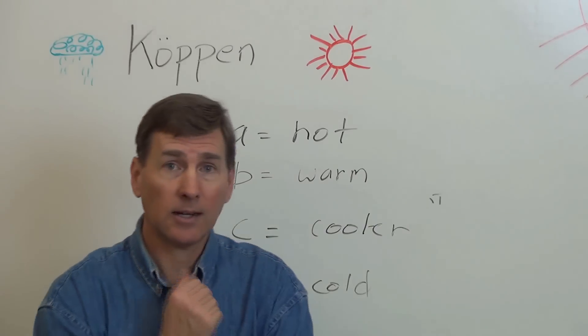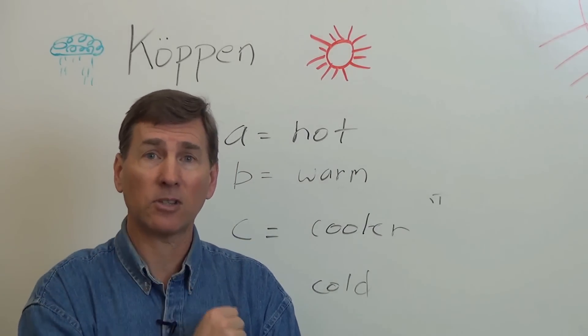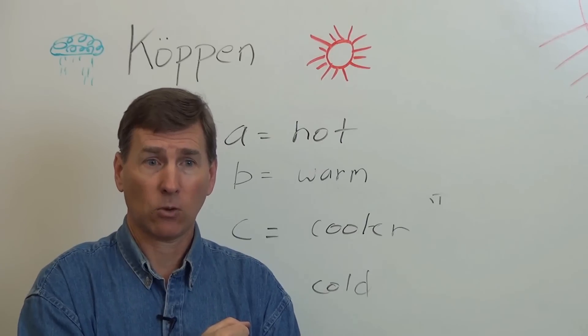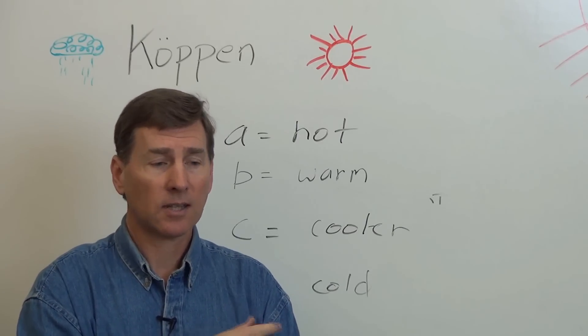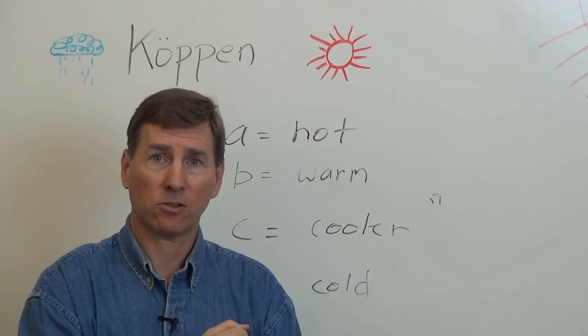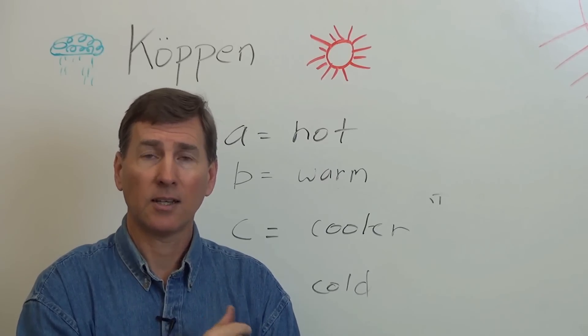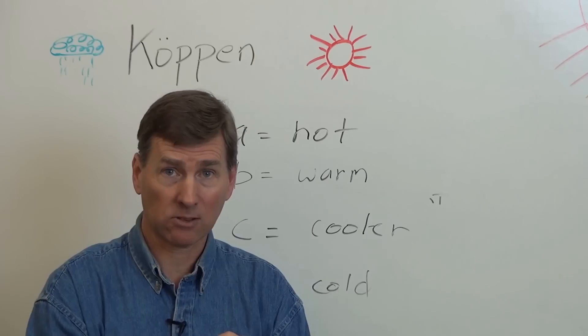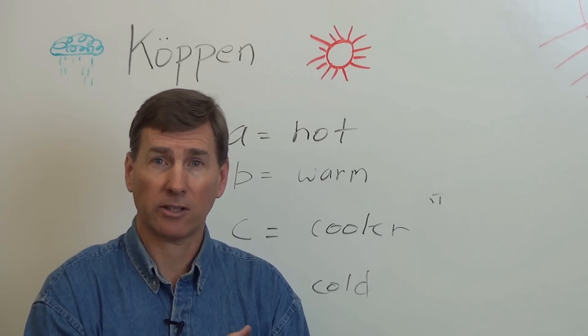So in summary, we do have three letters that we typically use for most of the climates. The first letter being the major temperature or climate zone. The second one being the moisture. And the third one being the temperature. With those three letters, we can distinguish between the different climates and do note there are names that are given to them. But for this discussion, let's just stick with the letters.